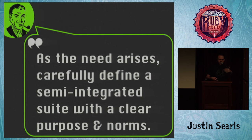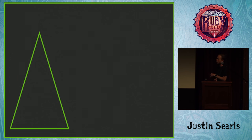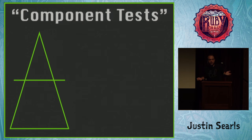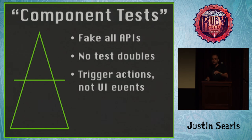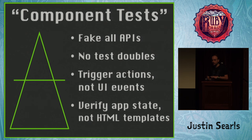The isolated suite's job is to make sure each individual little piece does exactly what it's supposed to do, and the integrated suite ensures that when it's all plugged together, everything seems to work. That works well for the first several months of any project. Eventually things get complicated enough where you might identify a middle tier where you'd like some test suites around branching. That's fine as long as you agree up front on the norms of that suite. For example, on an Ember team last year, we agreed we were going to fake out all APIs, not use any test doubles in these tests, trigger logical actions not UI events, and verify app state not stuff in the rendered HTML.